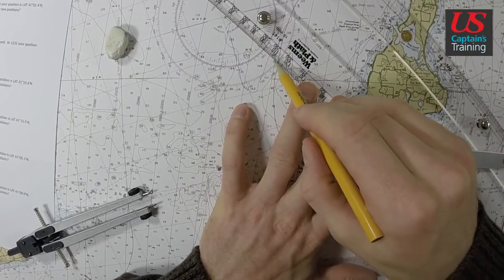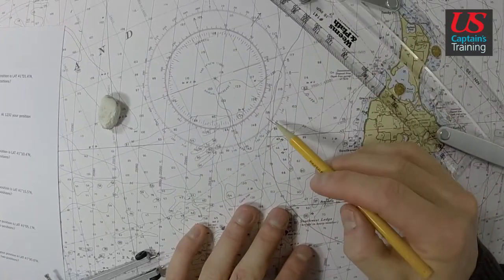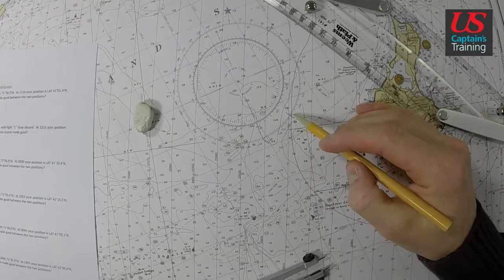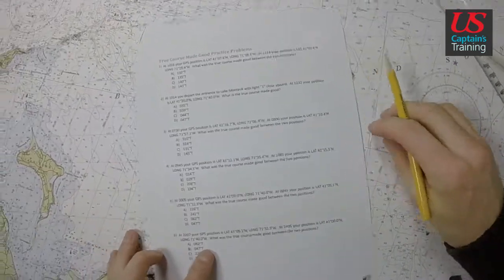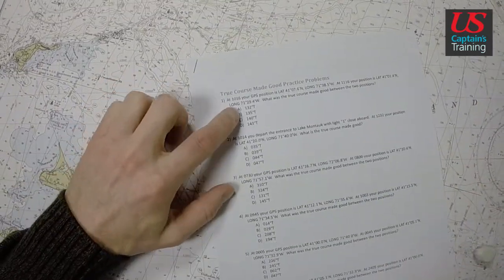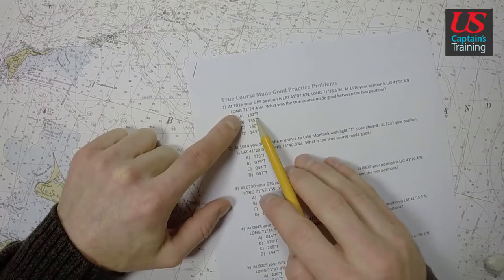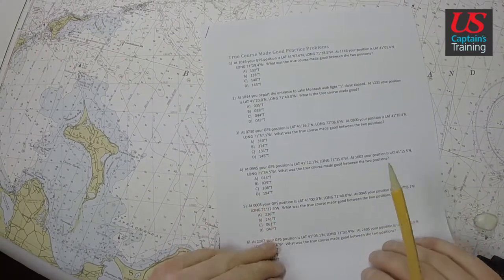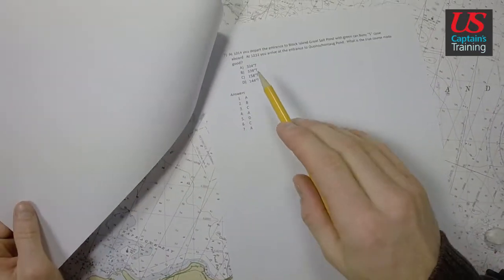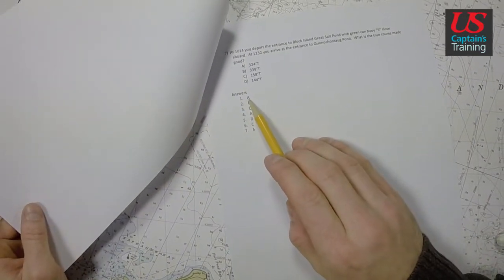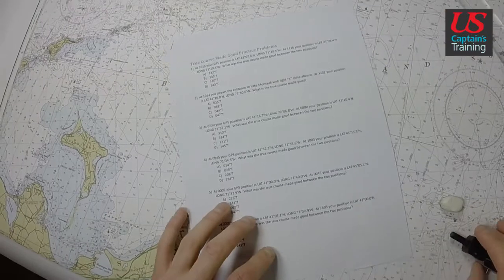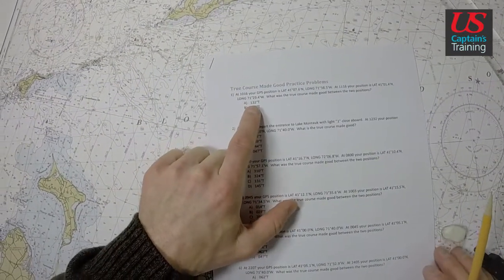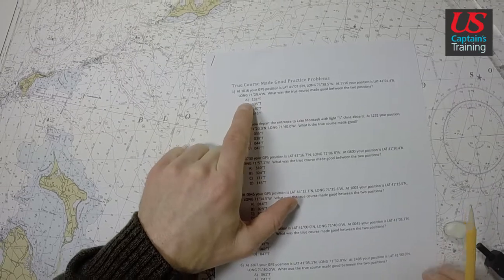If I take my pencil lead, I go right over it. I went from start to finish. So right here, I am recording 131, 132. So 132 degrees true. Now let's look at the answers. A is 132 true. So 132, number one, the answer is A. The correct answer to true course made good practice problem one is 132 degrees true, A.